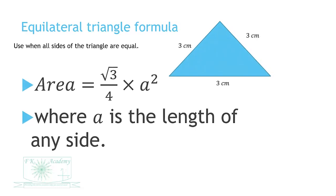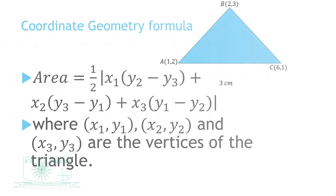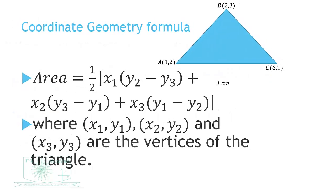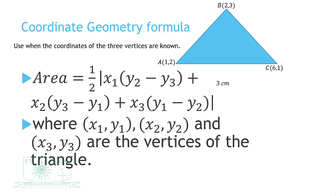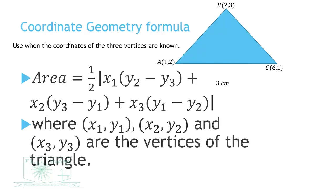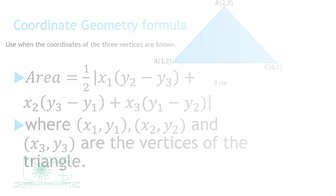The equilateral triangle formula: when you know all the sides of the triangle are equal, you can use it. Then we have the coordinate geometry formula, when we know all the vertices of the triangle — the three vertices. Thank you for watching, see you in the next video.